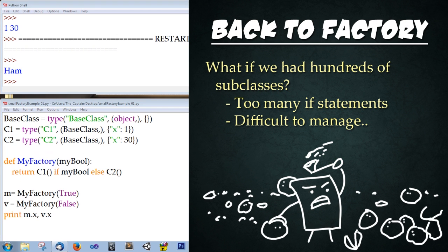After saving that file, close it and go back to the previous file. Now we're moving back to factories and creating a more complex form. The simple factory we created doesn't allow enough flexibility — if we had hundreds of classes, the if statement chain would be too long and messy to deal with. So let's develop a cleaner method by making a few adjustments.